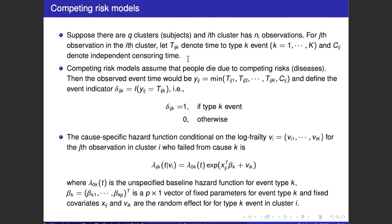Competing risk models assume that people die due to competing risks or diseases. Then, the observed event time would be Y_ig, the minimum value of T_ig1, T_ig2, ..., T_igK, and C_ig. And define the event indicator delta_igk equals I(Y_ig equals T_igk). Delta_igk is 1 if type k event and 0 otherwise.